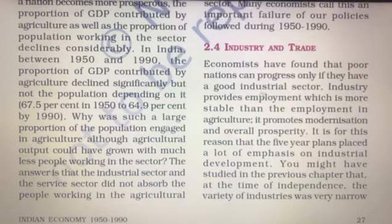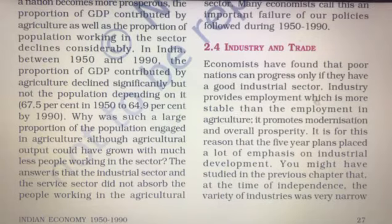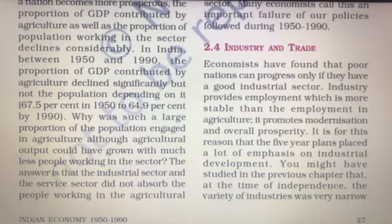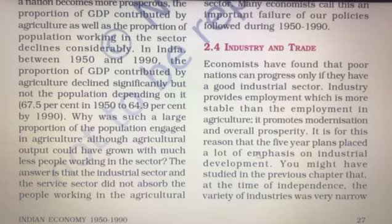Economists have found that poor nations can progress only if they have a good industrial sector. Industry provides employment which is more stable than employment in agriculture. It promotes modernization and overall prosperity. This is why industry is considered a better and more stable source of employment compared to agriculture.